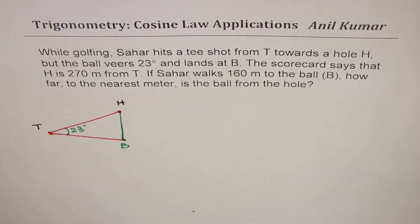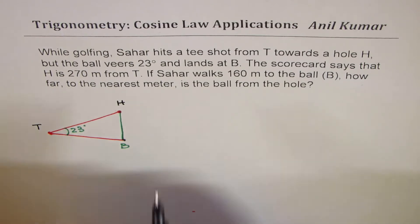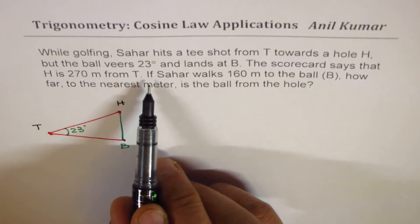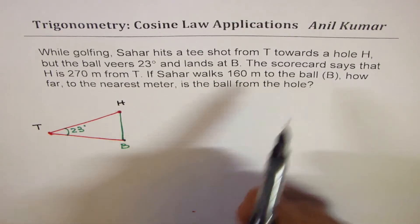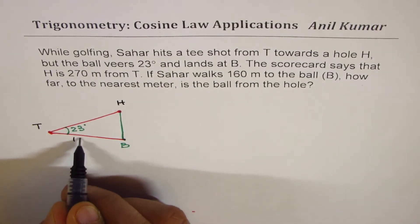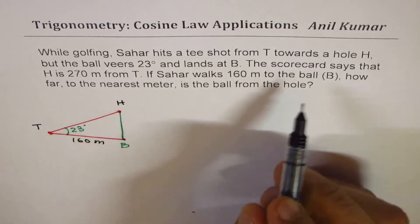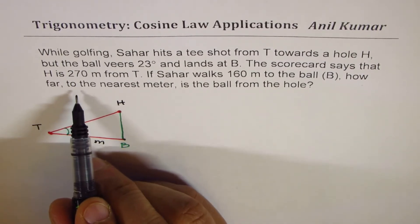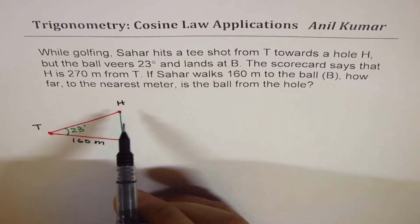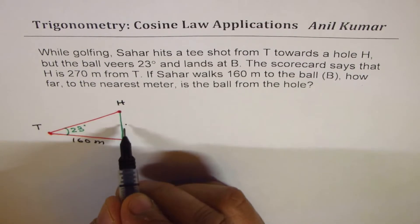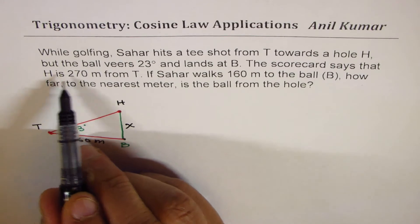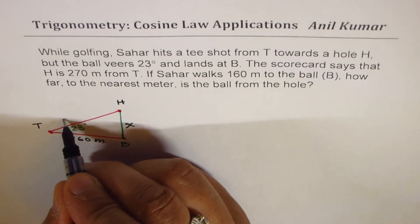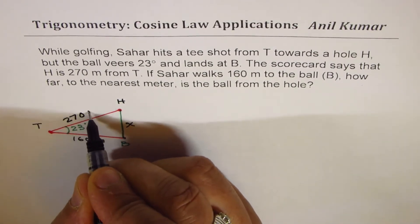You can always pause the video to answer this question and then look into my solution. It says if Sahar walks 160 meters to the ball, that means this distance TB is 160 meters. We need to find how far to the nearest meter the ball is from the hole, so let's call that distance X. We already know H is 270 meters from T, so TH is 270 meters.